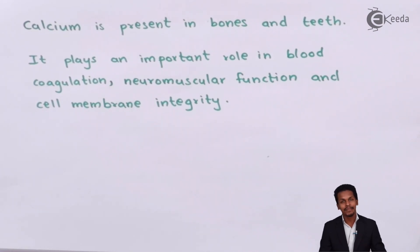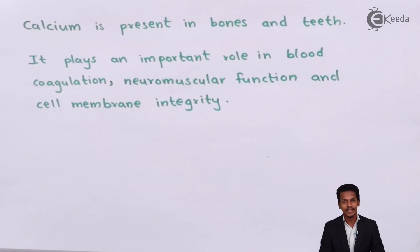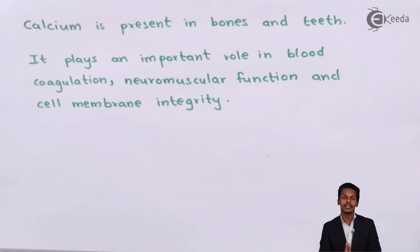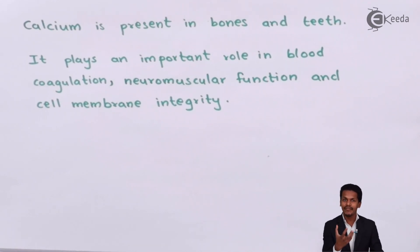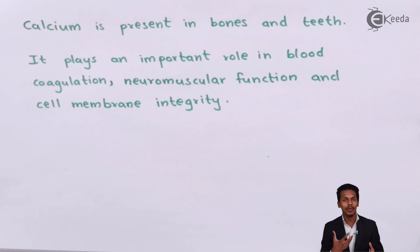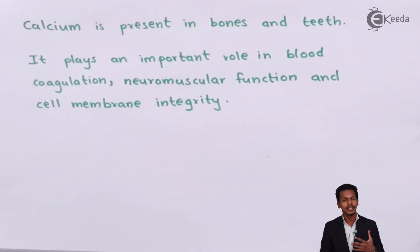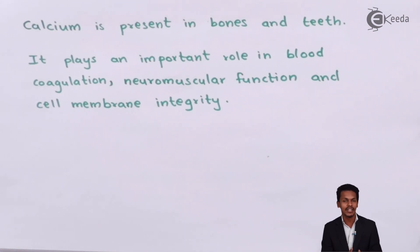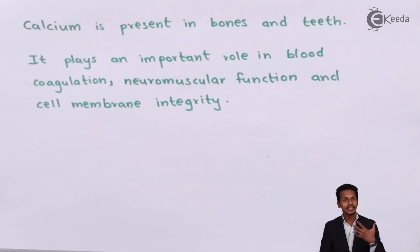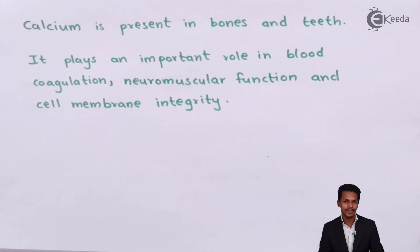Now let us talk about deficiency. If magnesium is not present in sufficient amounts in our body, we could have a problem known as neuromuscular irritation, which is nothing but the weakening of muscles, and obviously that could cause various problems. A sufficient amount of magnesium is required for our body.